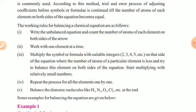Multiply the symbol or formula with suitable integers — 2, 3, 4, 5 — on the side of the equation where the number of atoms of a particular element is less. Start multiplying with relatively small numbers. Repeat this process for all elements one by one until the equation is fully balanced.